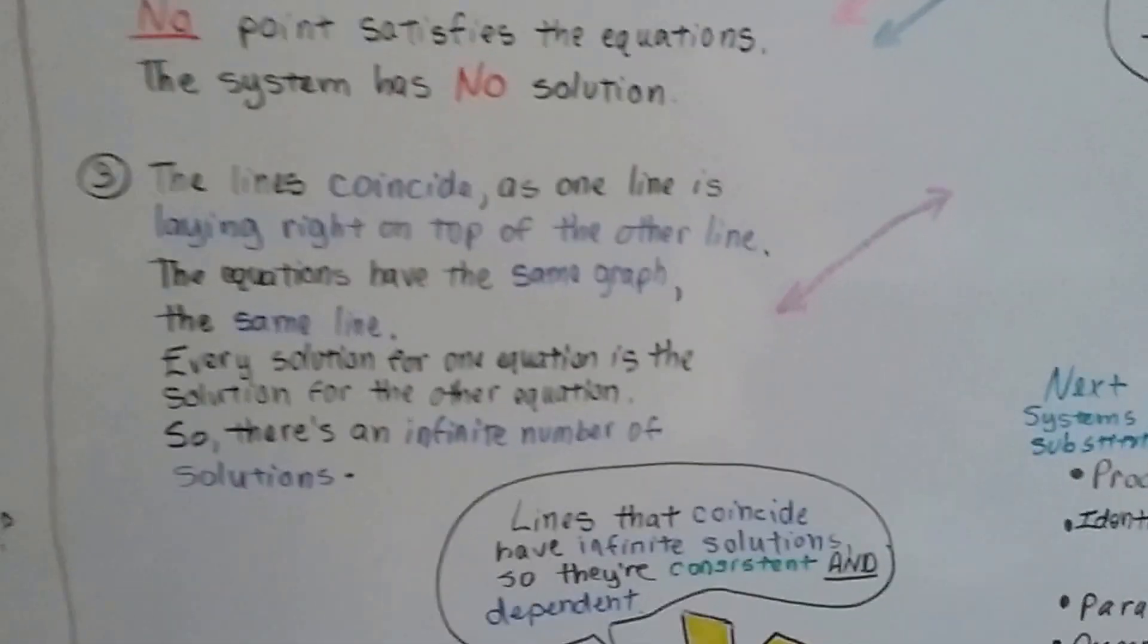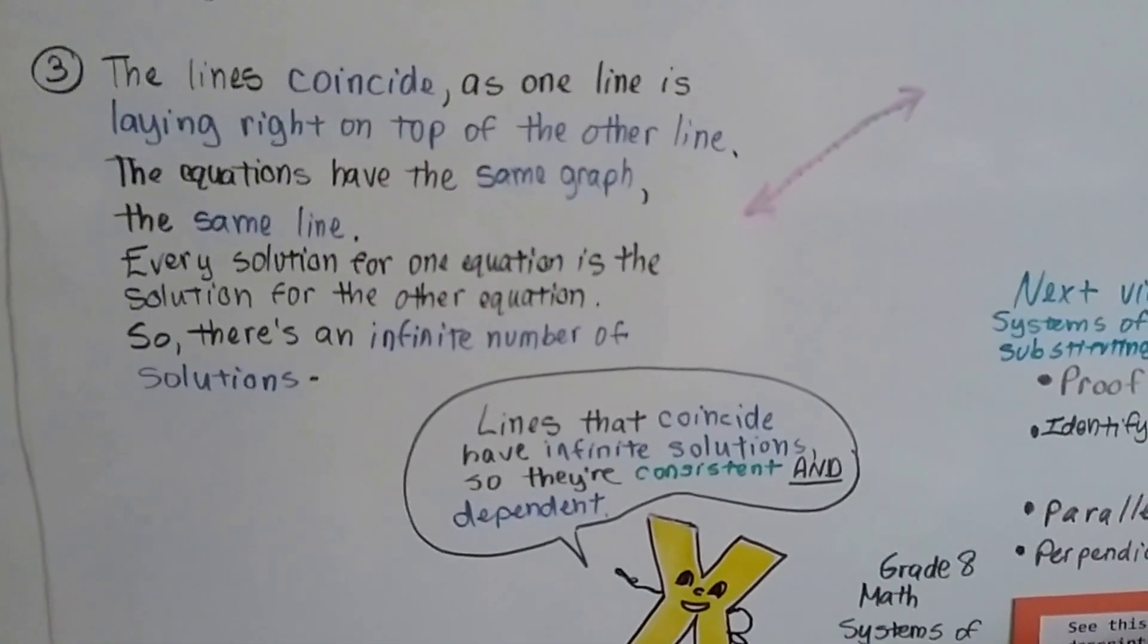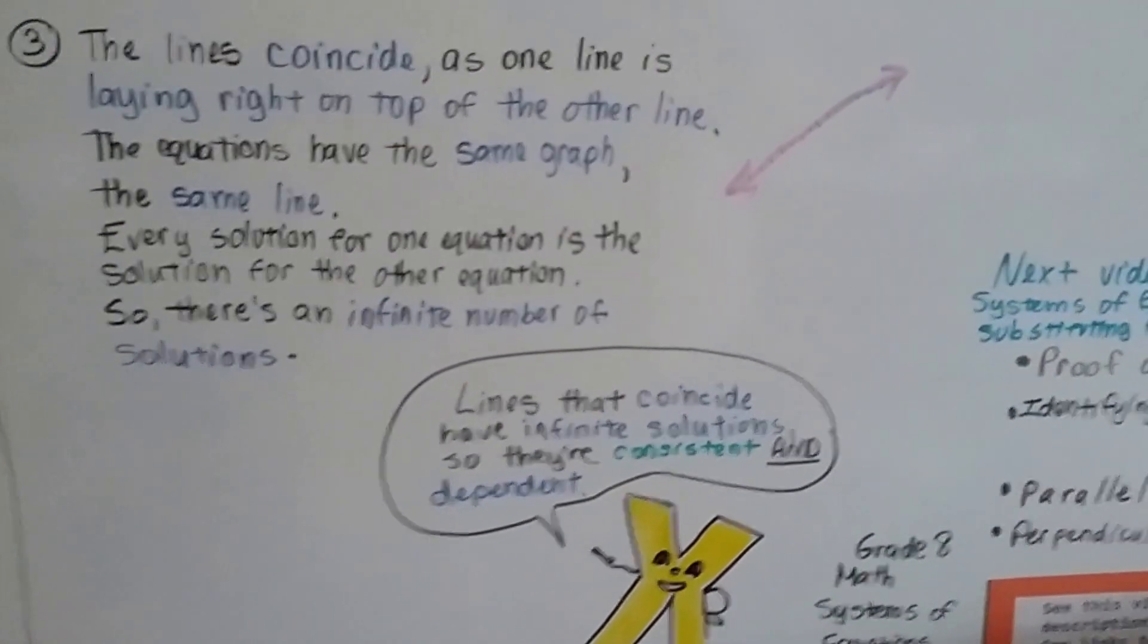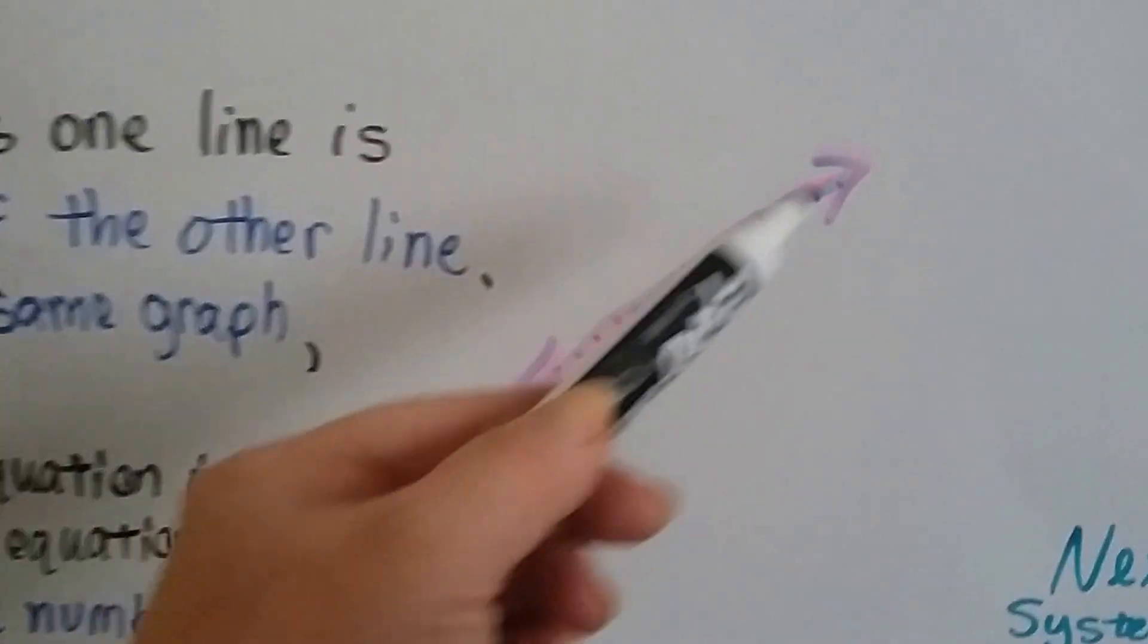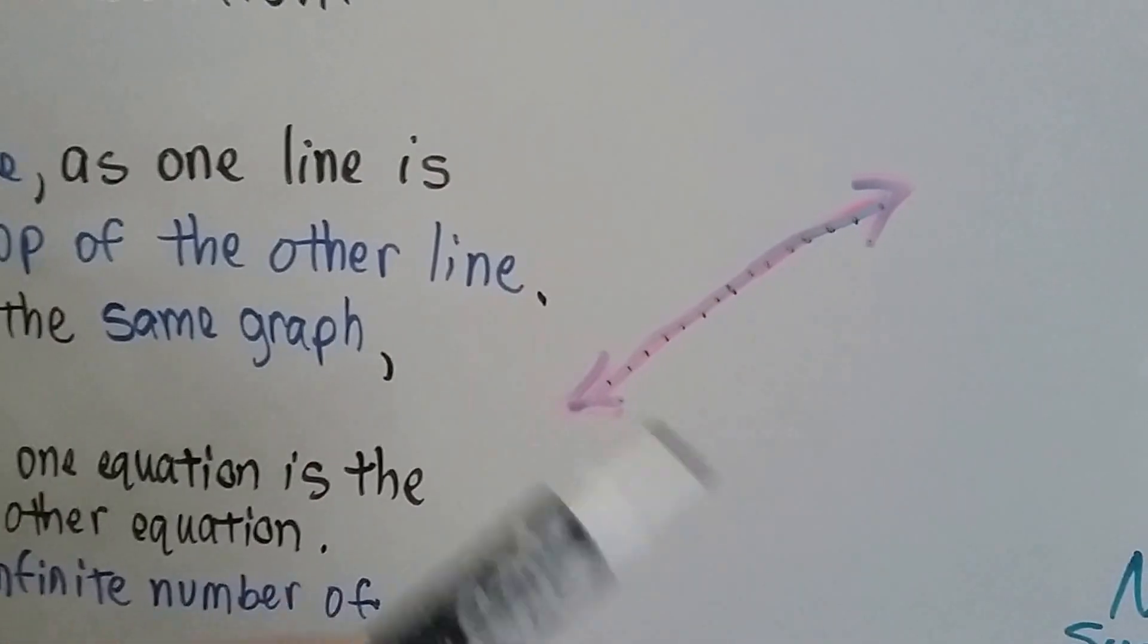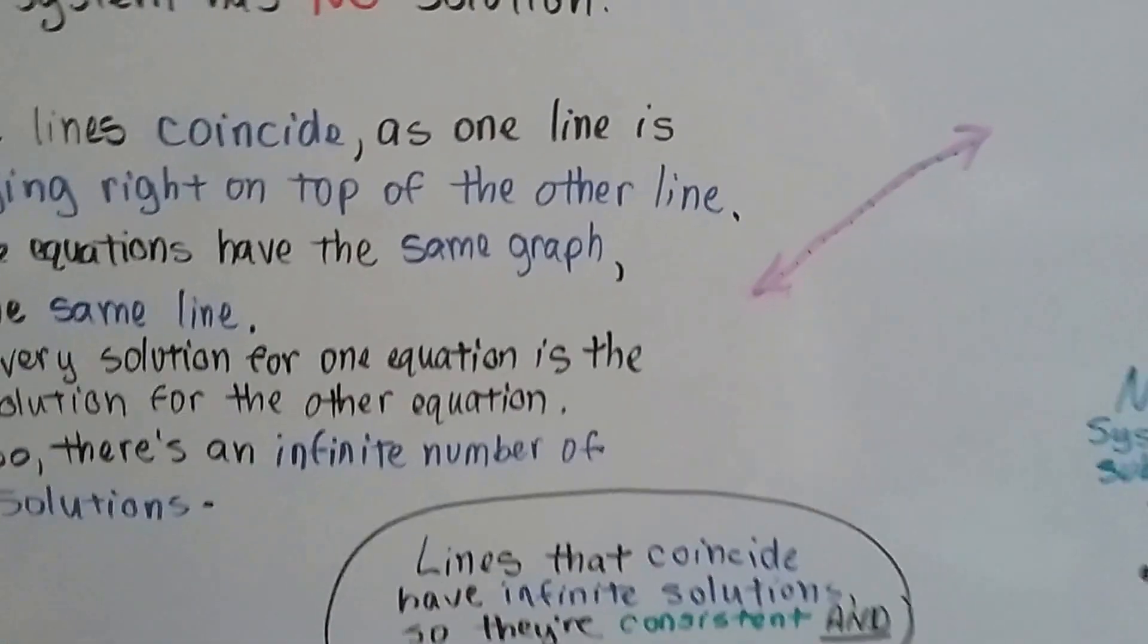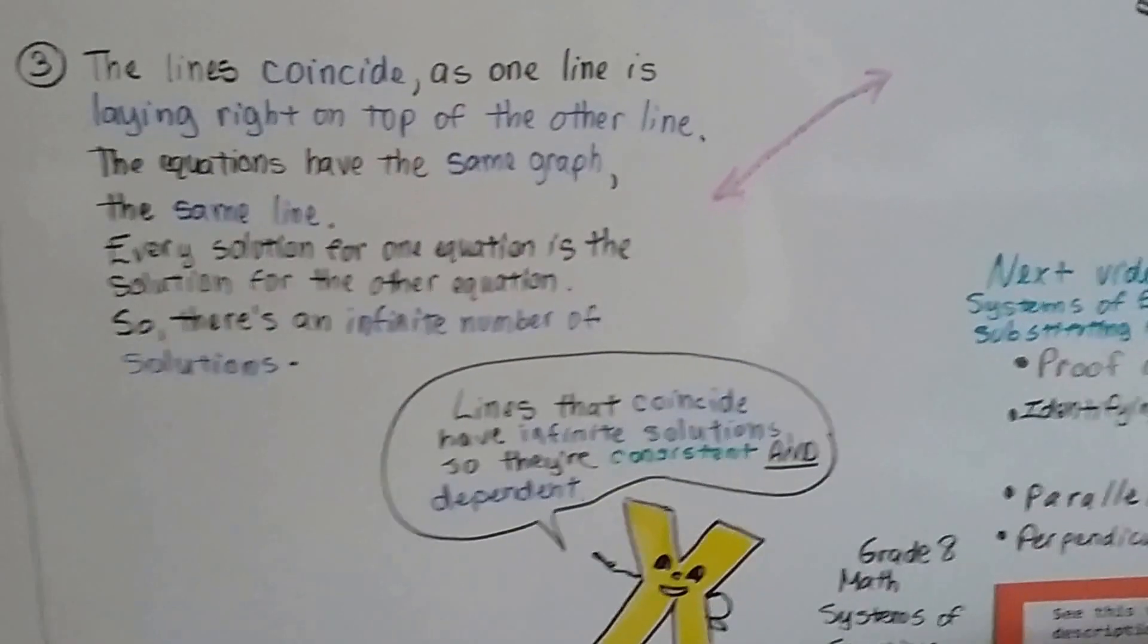Then our third possibility is the lines coincide as one line. One line is laying right on top of the other line. So we have our pink line, and the blue one's laying right on top of it. And the equations have the same graph. They have the same line.